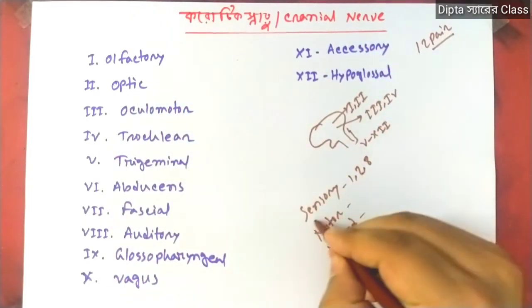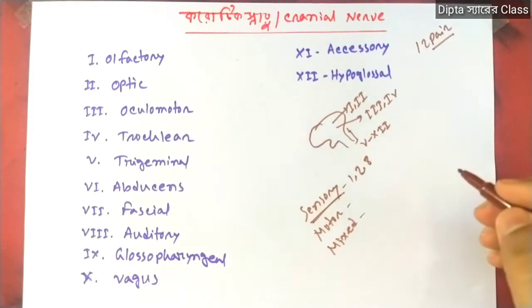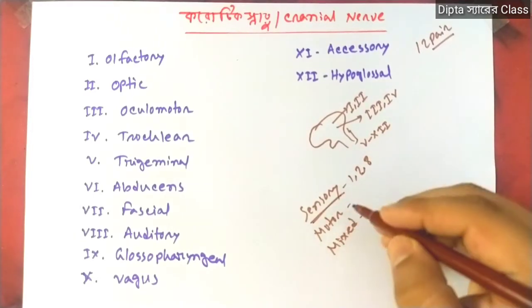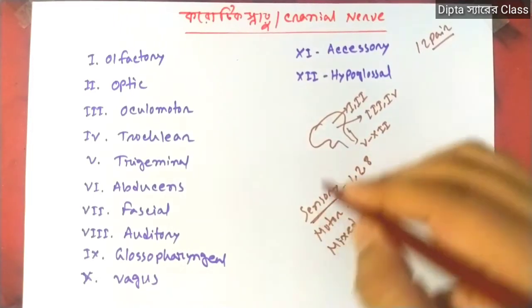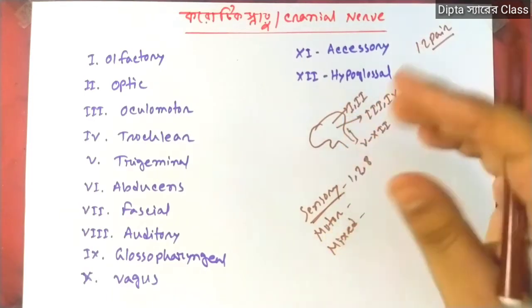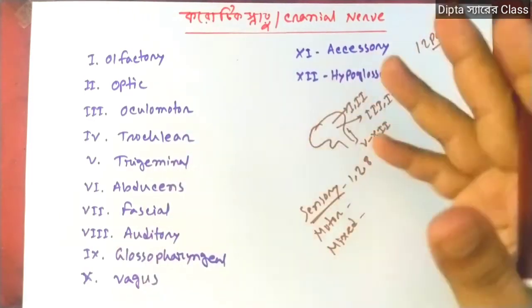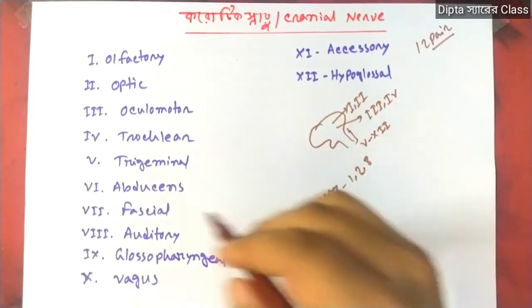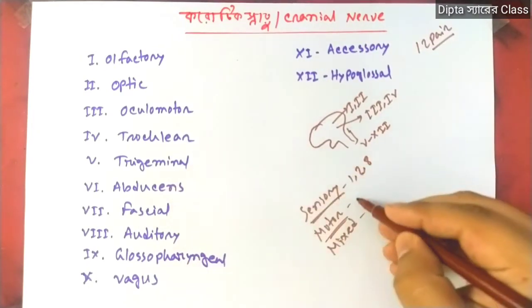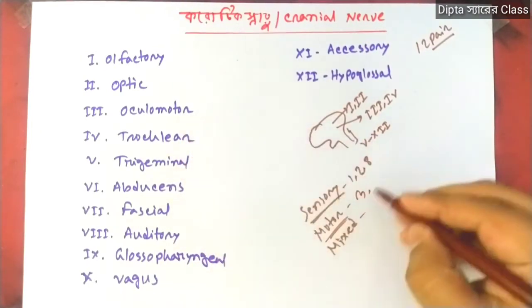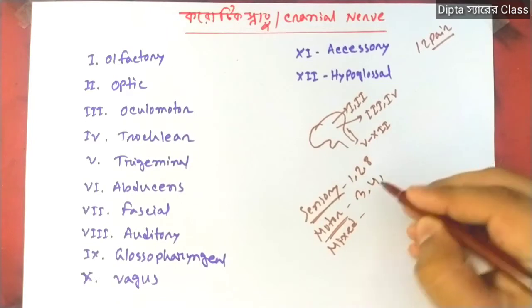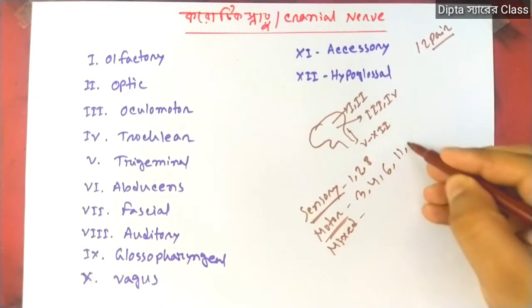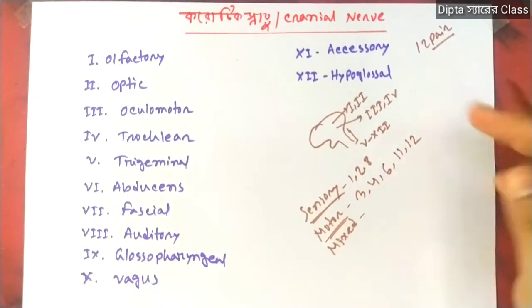This sensory function does not function as motor — it only carries sensory signals. The motor cranial nerves include the Oculomotor, Trochlear, and Abducens — we call these motor nerves.